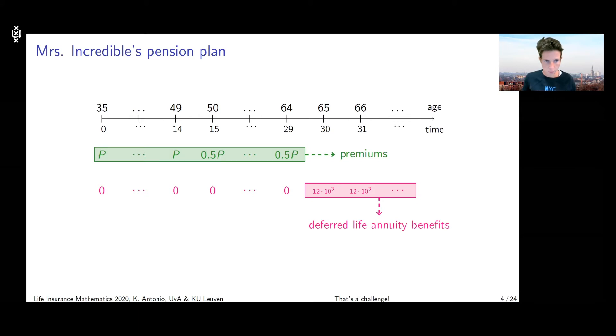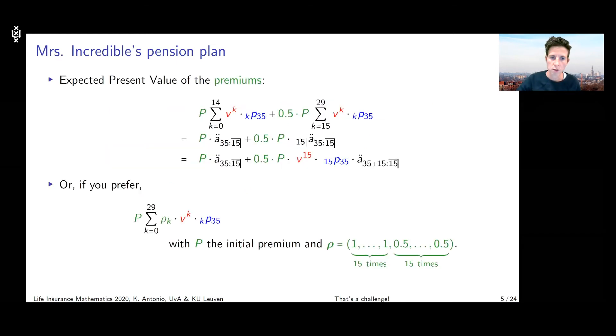If we then jump to the stream of cash flows that represent the premium payments from Mrs. Incredible to the insurance company, then we know that the first 15 payments will be equal to say P and P is unknown but fixed. We need to calculate the P and then the next 15 payments will be equal to 50% of P that's indicated here in green. So that means you have a payment, a premium payment at time zero, you've got the last one at time 29, 15 times P and then 15 times 50% of P.